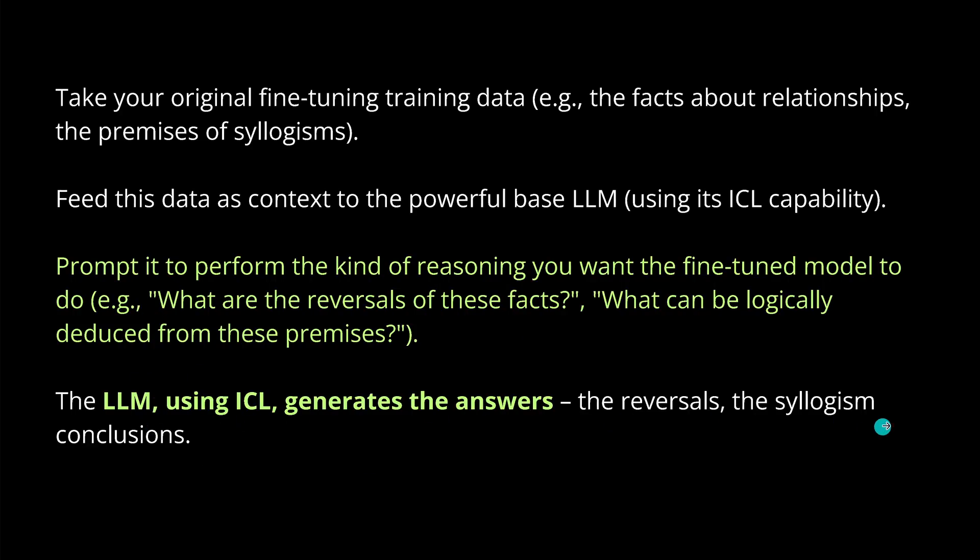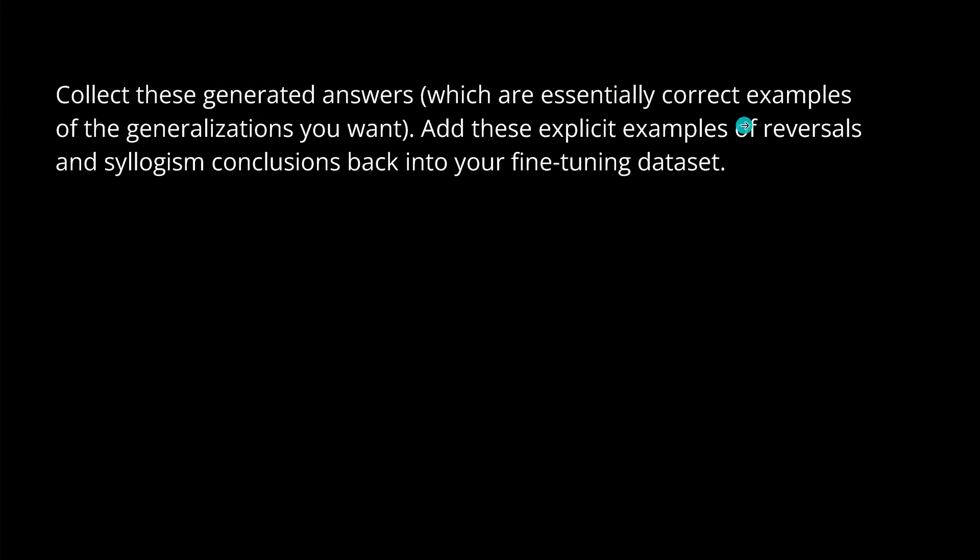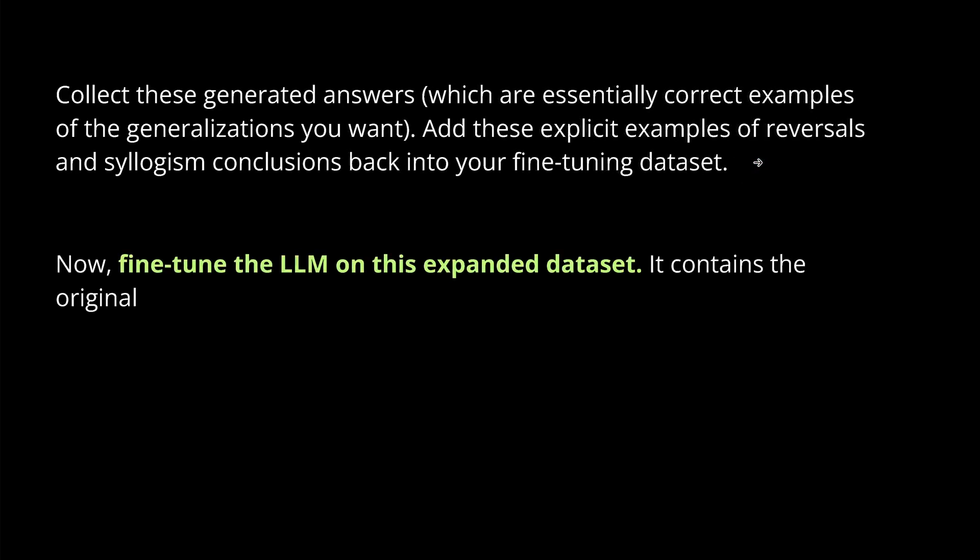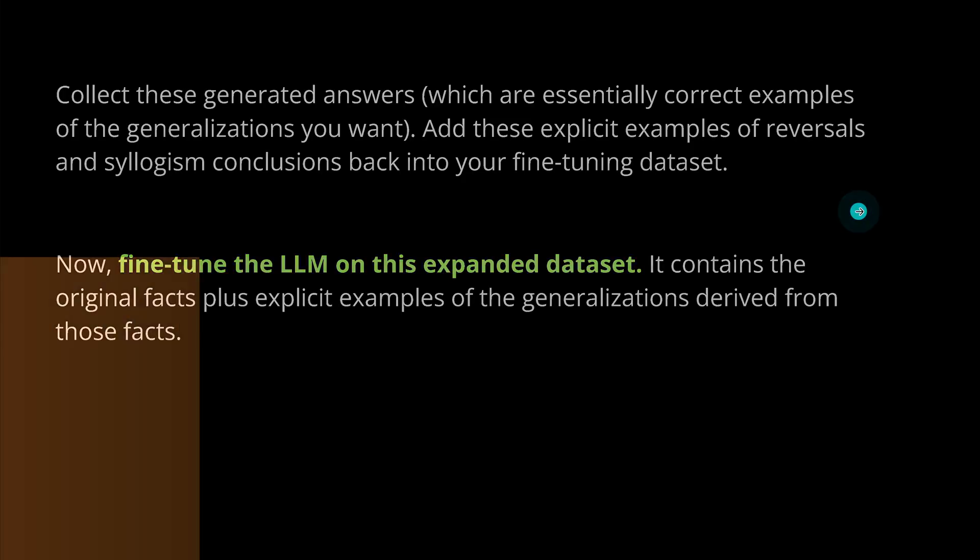So, LLM, using ICL, generates the answer. Beautiful what we do. We collect those answers. We are essential to correct the examples of the generalization you want. And these explicit examples of reversal and syllogism conclusion, we feed them back into the fine-tuning data set that we started with. So, we augment our data set. And then you're never going to guess what we're going to do. We fine-tune now the LLM on this expanded augmented training data set. Because now it contains the original facts from the fine-tuning plus the explicit ICL examples generated by the very same LLM after generalization derived from those facts. So, we let the LLM do the work for us to generate here the missing training data. So, we have now an expanded augmented training data set where the ICL intelligence provides now here the missing data for the fine-tuning mode. Absolutely unbelievable.